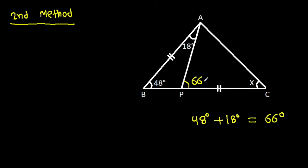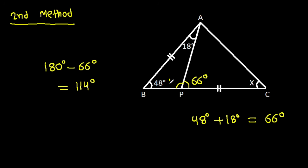This angle is 66 degrees. So this angle will be 180 degrees minus 66 degrees, that will be 114 degrees. It is 114 degrees. So this angle will be 114 degrees minus X.